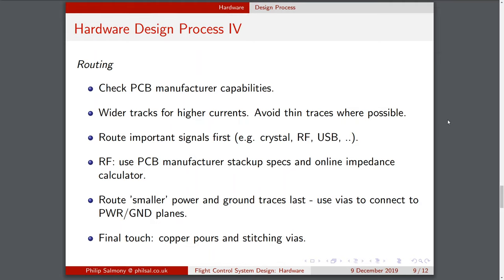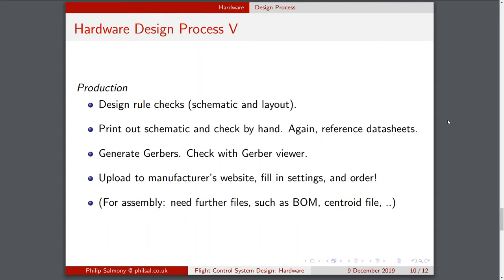The final touch is doing the copper pours and stitching vias. Once routing is done, make sure everything's connected — do a design rule check on both the schematic and layout. Print out the schematic, take a day off, then come back with a clear mind and check that everything is connected correctly and component values are right, using data sheets as a reference. Once happy, generate the Gerbers, check them with a Gerber viewer to verify planes are connected and there are no islands, then upload to the manufacturer's website and order.